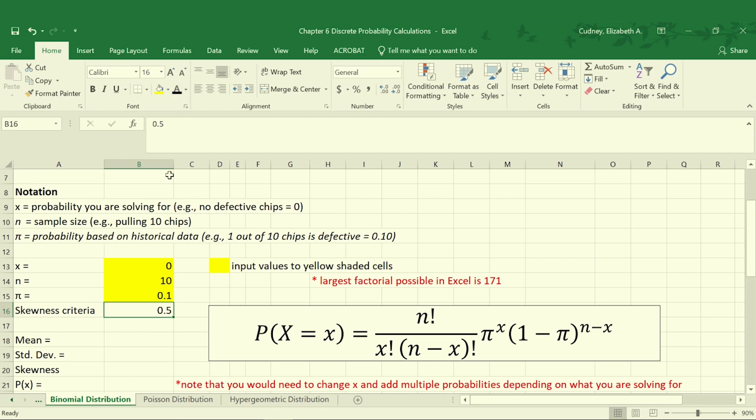So we're going to use a skewness criteria of 0.5 that we'll just assume is a constant. For our mean we're going to calculate that by knowing what our average is going to be. So our mean is always calculated as our n value times our pi value. So in this case it's b14 multiplied by b15. Our standard deviation is calculated by taking our mean value and multiplying it times one minus pi, and then taking the square root of that value.